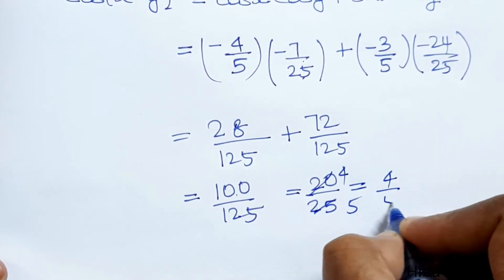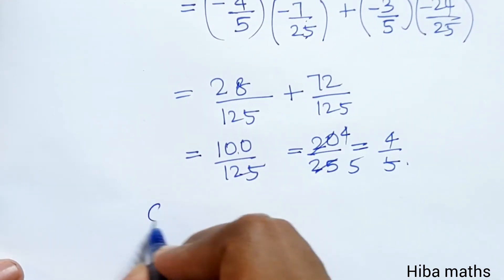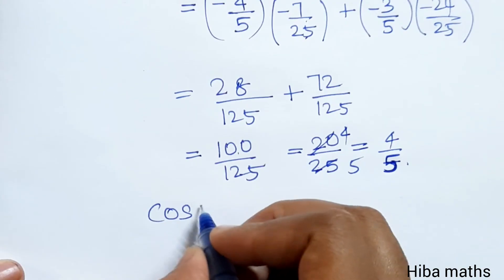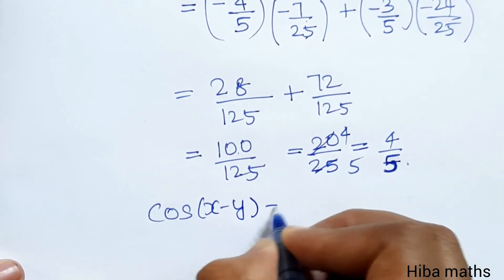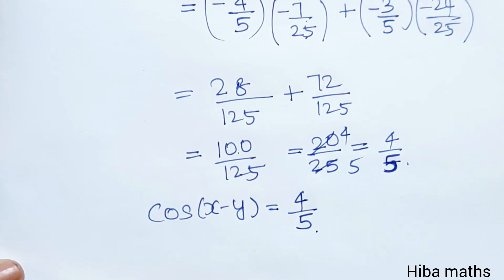So our answer is 4 by 5. The value of cos(x-y) is 4 by 5. Easy to understand. Thank you so much for watching.